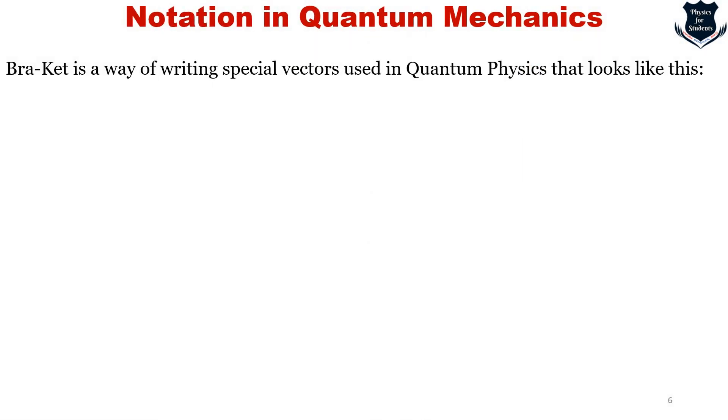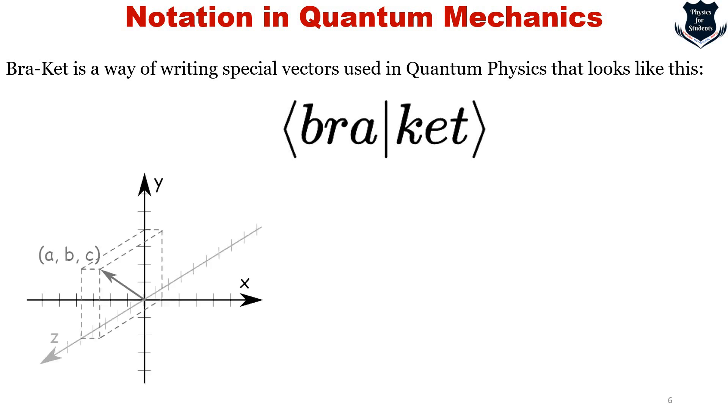The Bra and Ket is a way of writing vectors used in quantum physics. This is how we write it: Bra followed by a horizontal then Ket with the angular bracket. This is a vector in three dimensions A, B, and C. We can write as a column vector or in a Ket form. Remember, Kets are something special.